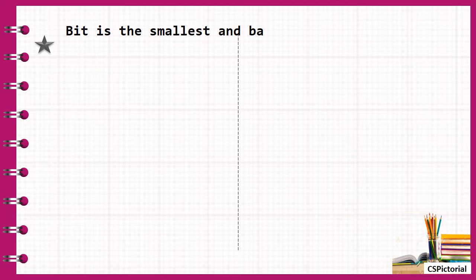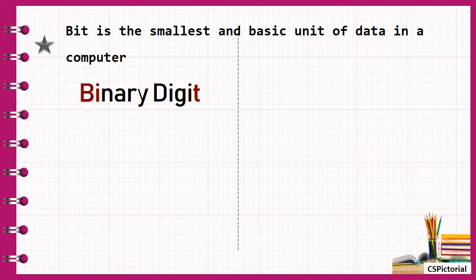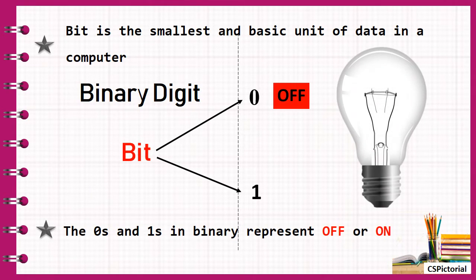The common term used in the binary number system is the bit. Bit is nothing but the binary digit. It has only 2 values 0 and 1. The 0 represents off and 1 represents on.